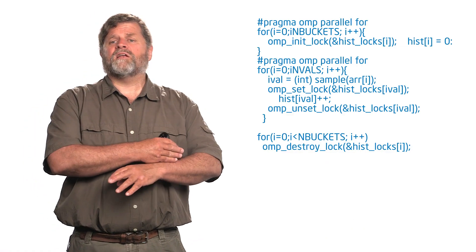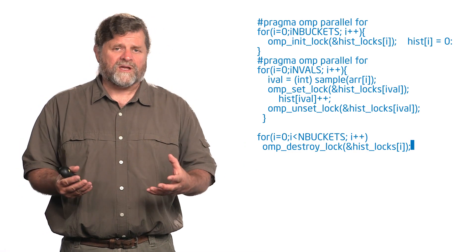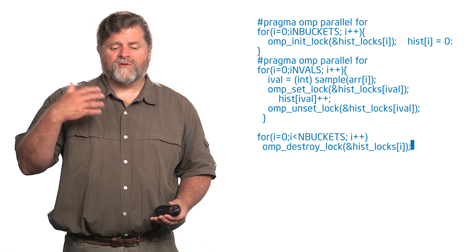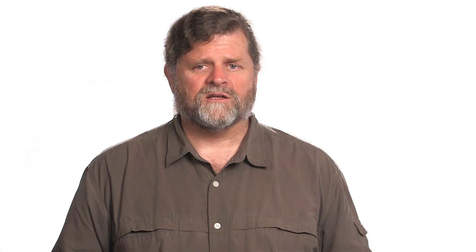Then when I'm done, because I've created all this stuff in memory to hold that array of locks, I better destroy them. So you can see I now have a loop at the end where I destroy all the locks I just created. So that's a case where I would use locks.